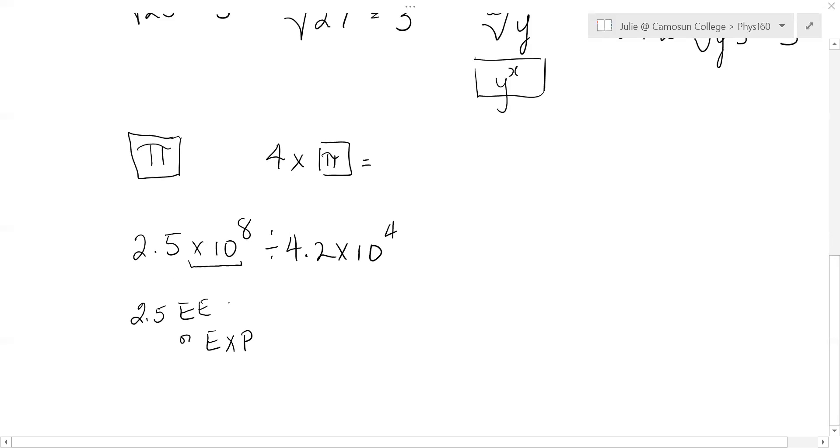And then you go divided by 4.2 times 10 to the 4. And on your calculator, this should give you 5952.3810, and possibly even more decimals.